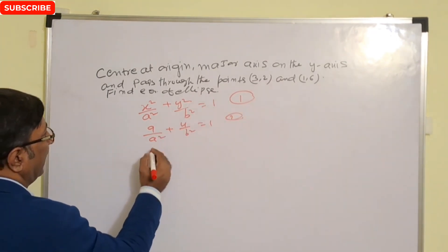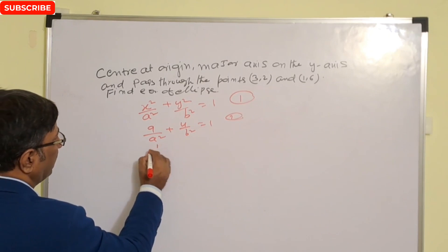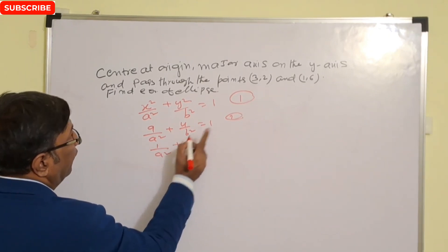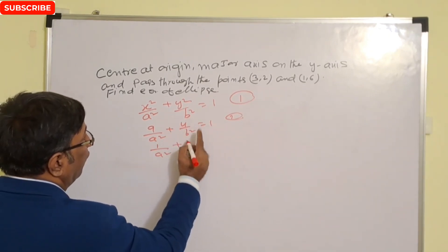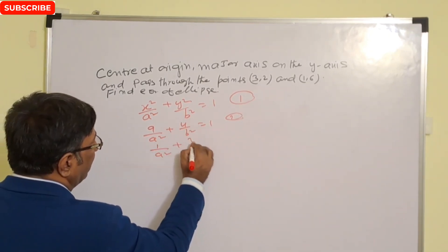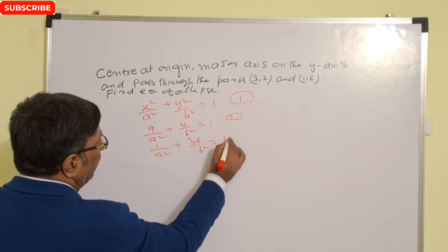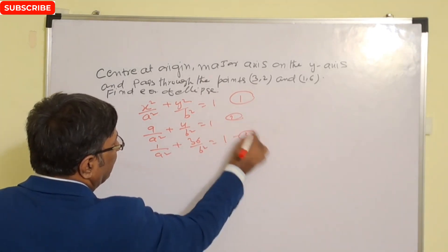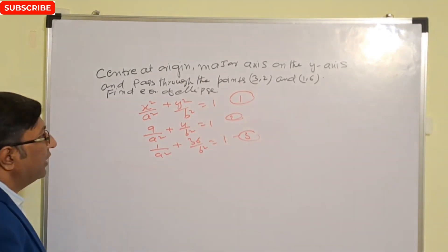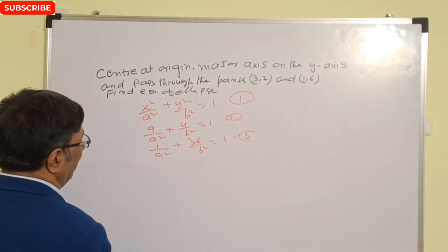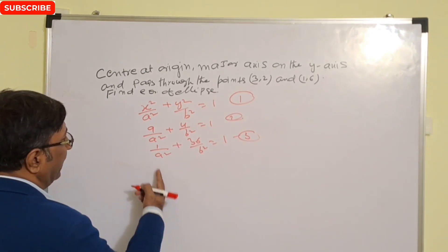Again, for point (1, 6), put x = 1 and y = 6, giving us 1/a² + 36/b² = 1. This is the third equation. Now solve the second and third equations together.